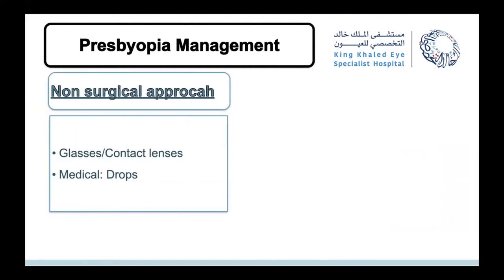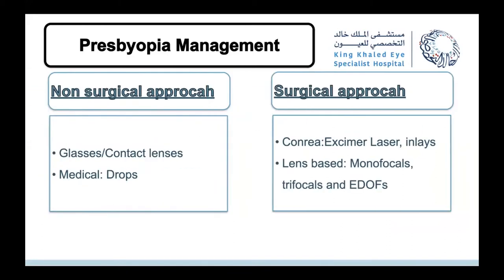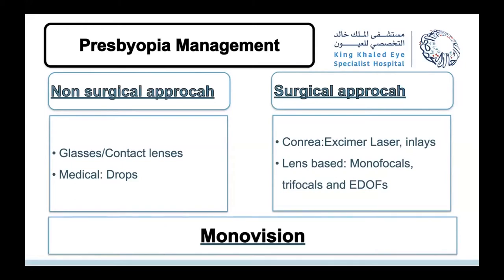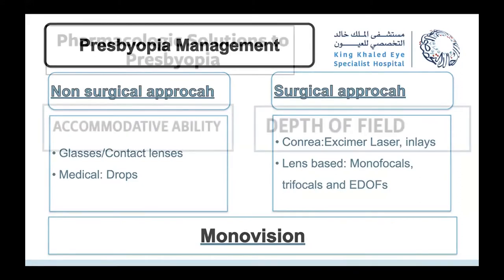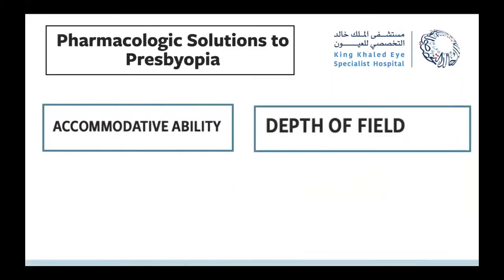Presbyopia management can be divided into two big approaches: the non-surgical approach — the classic, still-valid options of glasses, contacts, and recently approved drops — and the surgical approach, where we address presbyopia through the cornea, the crystalline lens, or intraocular lenses. In between, we have monovision, which can be applied to both approaches to help the patient become spectacle-independent.